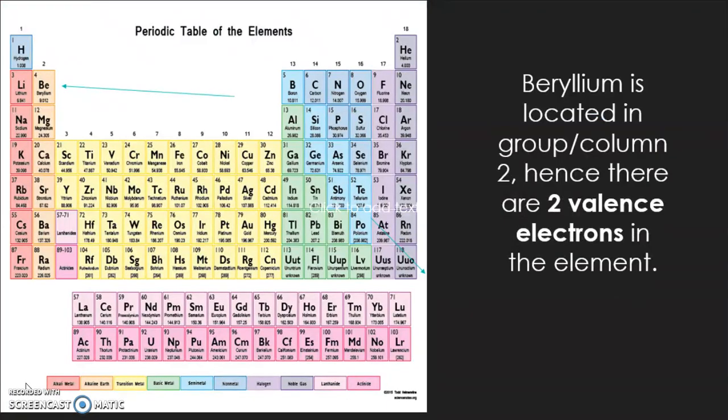As you can see in this picture, since beryllium is located in group/column 2, there are two valence electrons in this element. Groups represent columns, and periods represent rows.